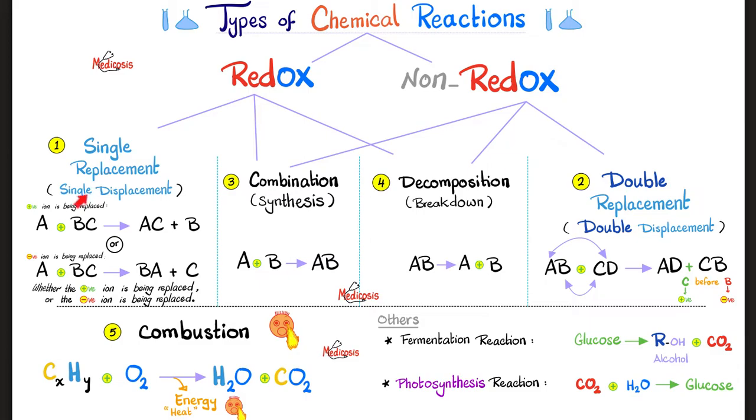Let's start by single replacement or single displacement. It could be written this way or this way. For example, A plus BC, these are the reactants, yield AC and B. These are the products. See what happened here? We kicked B to the curb. B has left the chat. And then A cometh and combineth with C. So we have AC and B which was kicked to the curb. B was replaced. And since B is written before C, B is the positive ion and C is the negative ion. The positive ion has left the chat.